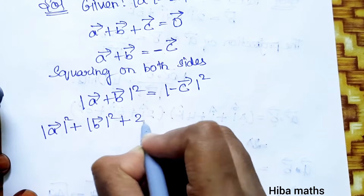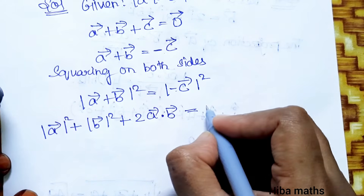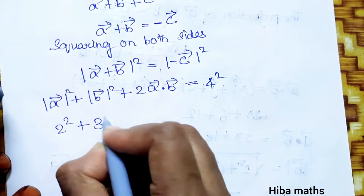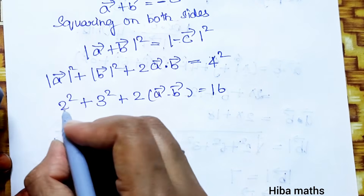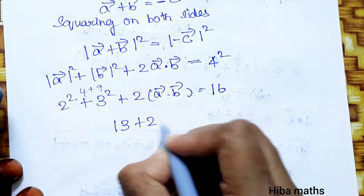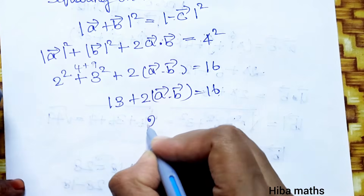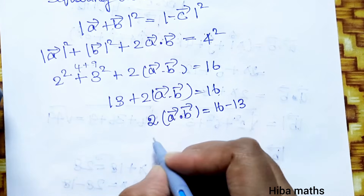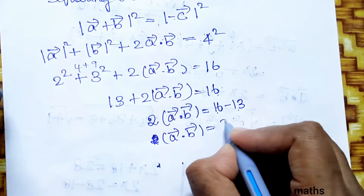Expanding: a vector square + b vector square + 2(a·b) = c vector square. So 2 squared + 3 squared + 2(a·b) = 4 squared, which gives 4 + 9 + 2(a·b) = 16. Therefore 13 + 2(a·b) = 16, so a·b = 3/2.